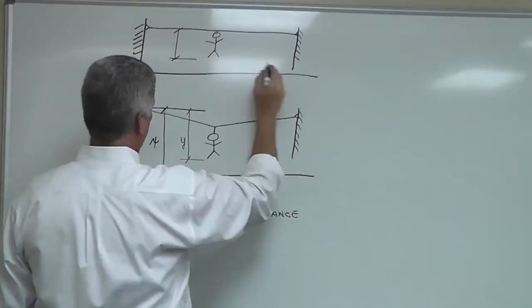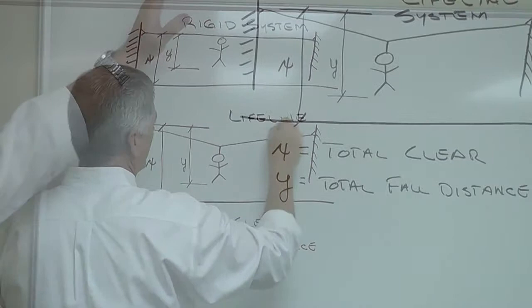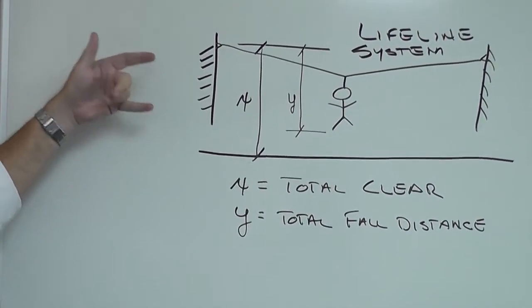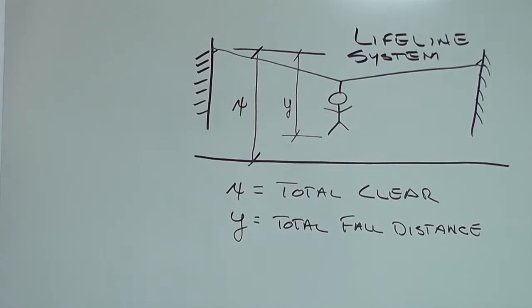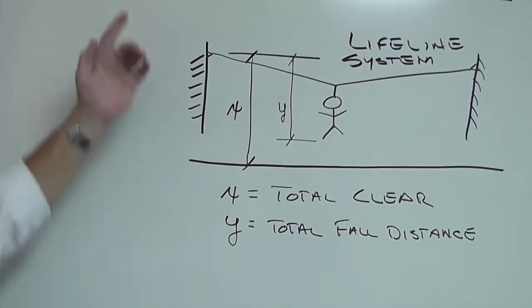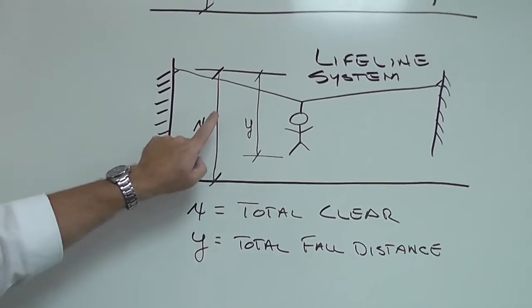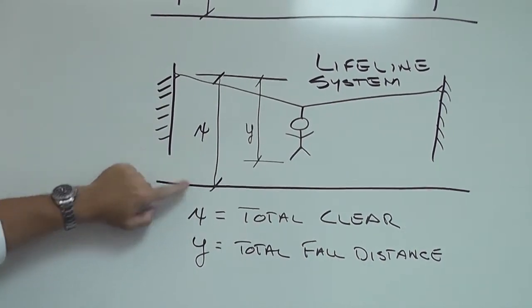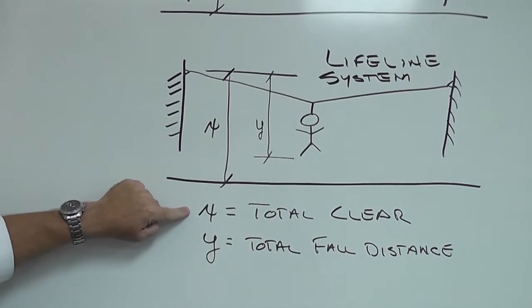In this illustration we're showing the primary difference between the rigid and the lifeline systems. In a lifeline system it requires a greater fall distance than a rigid system due to the deflection in the cable. Here we illustrate X is equivalent to the total clear distance for the fall.